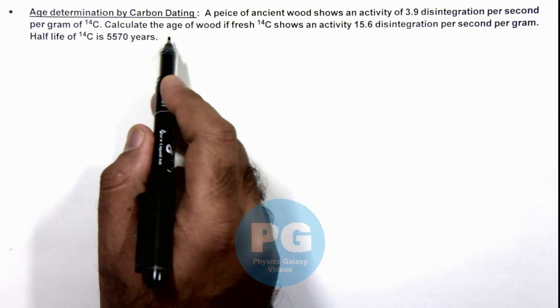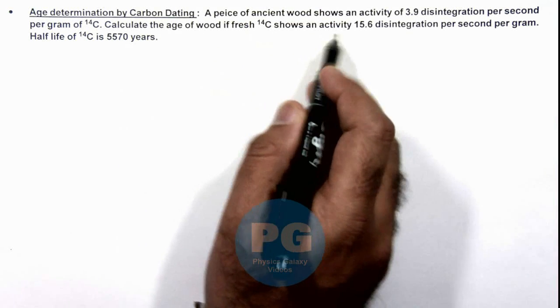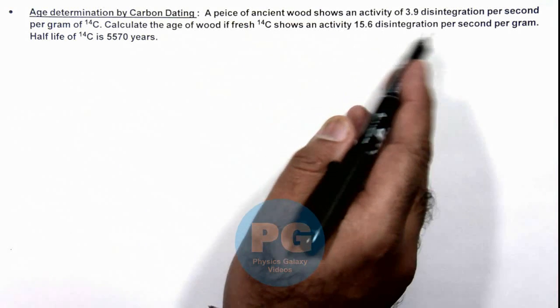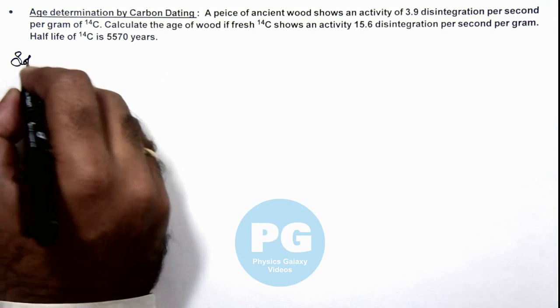We are required to calculate the age of wood if fresh carbon-14 shows an activity of 15.6 disintegration per second per gram and we are also given with the half-life of carbon.